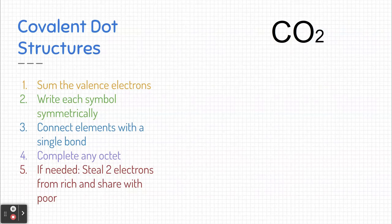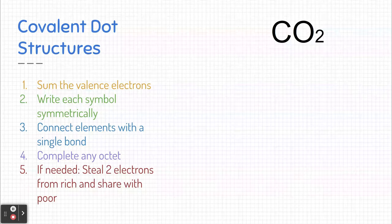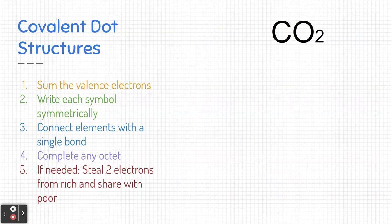Here we have carbon dioxide. Let's follow the steps on the left-hand side to see if we can figure out what the dot structures look like to determine if there's any single, double, or triple bonds. The first thing I'm going to do is sum or add up all of the valence electrons from each of the elements in this compound.